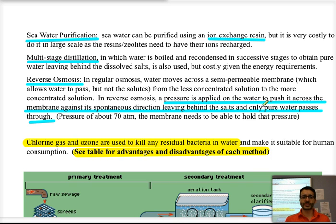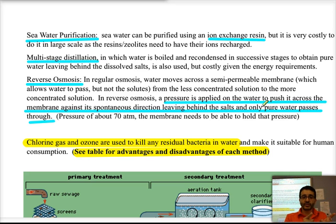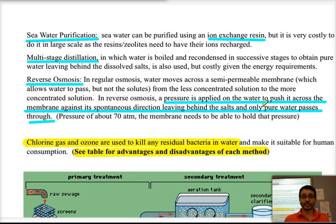The most recent system being used is reverse osmosis, in which we have a membrane and put the salt water on one side, then apply pressure. This pressure moves the water against its natural direction — only water passes through the membrane, leaving the remaining side more concentrated. In normal osmosis, water moves from the less concentrated side to the more concentrated side; here we move it in the opposite direction by applying pressure, producing pure water while leaving salts behind. It is energy demanding but less so than distillation.